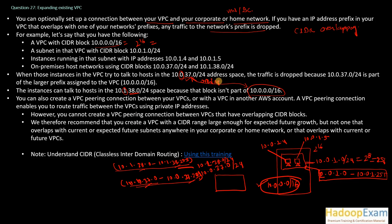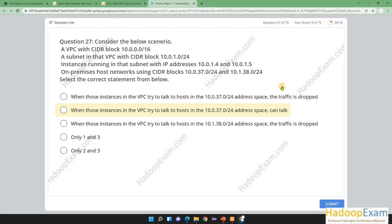You can also create a VPC peering connection between your VPC or a VPC in another AWS account — VPC peering enables you to route traffic between VPCs, as we've discussed previously. Now looking at the answer options: when those instances in the VPC try to talk to a host in 10.0.37.0/24 address space, the traffic is dropped — yes, that is the correct option.